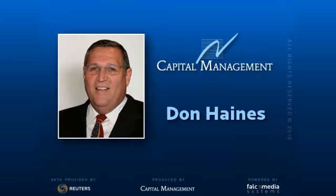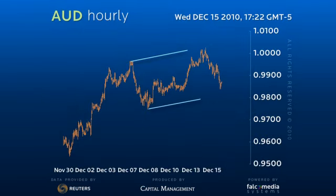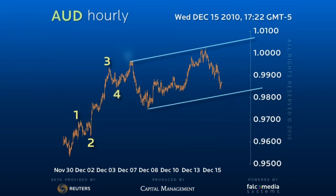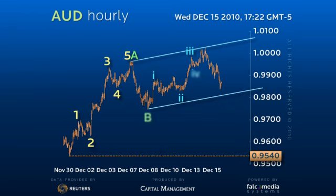Good day and welcome to the intraday outlook for the Australian dollar. The Aussie appears to be settling into a larger 101.85 to 95.40 consolidation triangle, with the failure to hold the 98.80 pivot point.